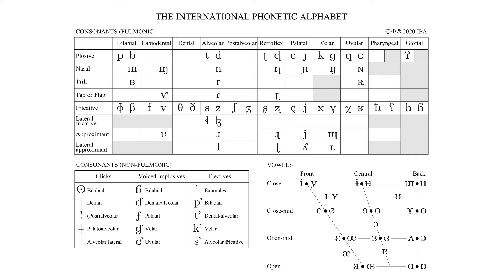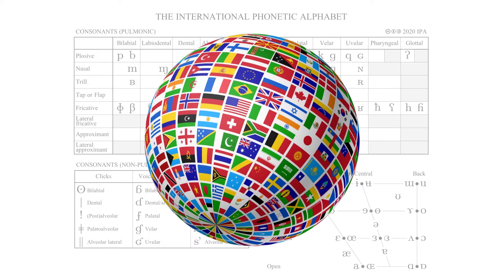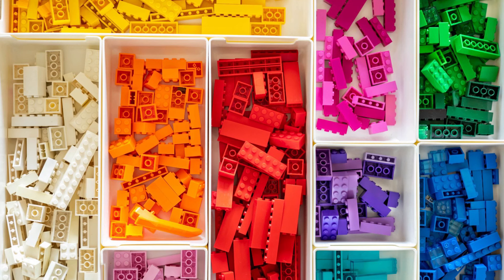IPA stands for the International Phonetic Alphabet. And if this chart looks scary to you, don't panic. This whole thing covers all 7,000 languages on earth. It's a construction set — instead of bricks, you have sounds. You just need to understand the logic and see how the IPA applies to a target language.